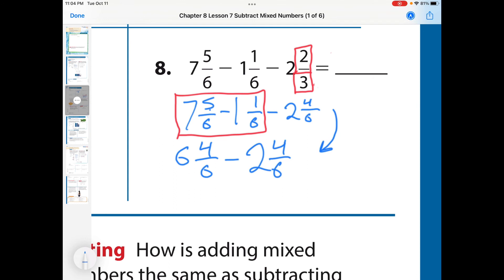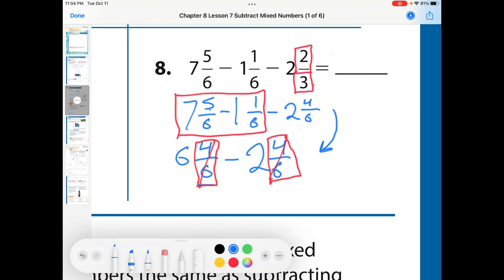Now, I don't know if you guys see this, but I am starting to see a possibility that this 4 sixth right here is going to be subtracted by another 4 sixths. And I think that's going to cancel each other out. And so what is left over for us is going to be 6 minus 2, which gives us 4. And that is going to be our answer for this. All right, guys. I hope that helps. Thank you.